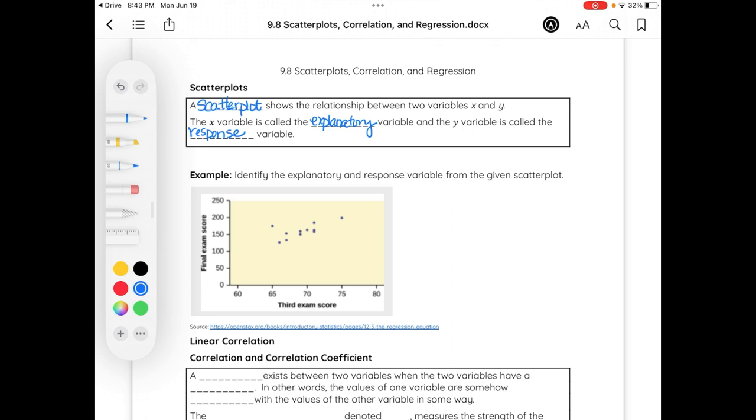So in this picture, we have the x-axis, which is the third exam score. This will be the explanatory variable, as it's our x-axis, and then the response variable is the final exam score. I also see that there might be a linear correlation here, slightly like this, slightly strong, if you will.